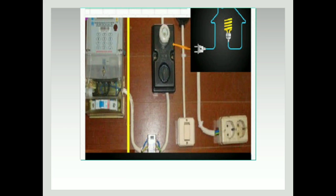Kalau diperhatikan pada gambar di sini, itu terlihat pada MCB satu fase, berarti warna kabelnya yang dipakai: untuk fase itu mungkin bisa merah, mungkin bisa hitam, mungkin juga bisa biru. Sedangkan pada hijau untuk netral dan kuning untuk arde atau ground.